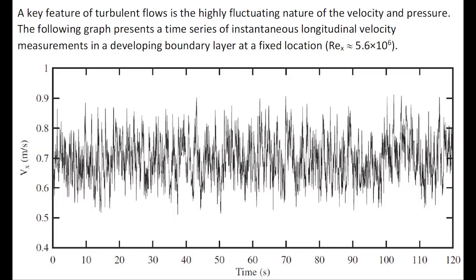The following datasets present instantaneous longitudinal velocity measurements in a developing turbulent boundary layer. A key feature is the highly fluctuating nature of the velocity, and also of the pressure, not shown here.